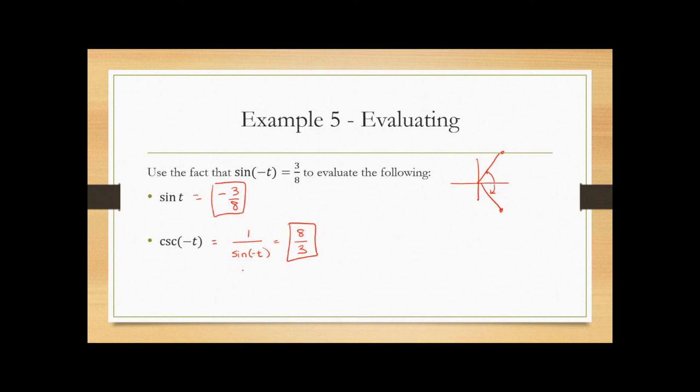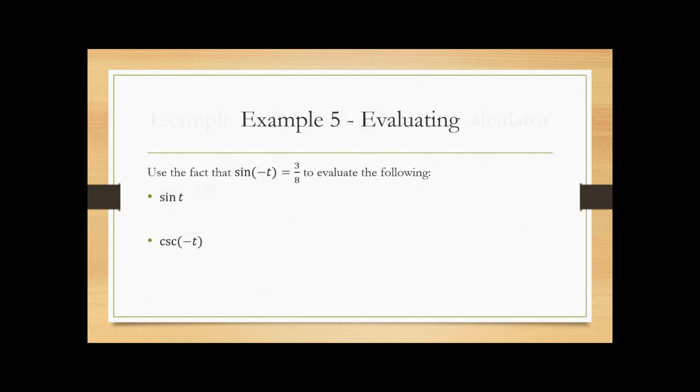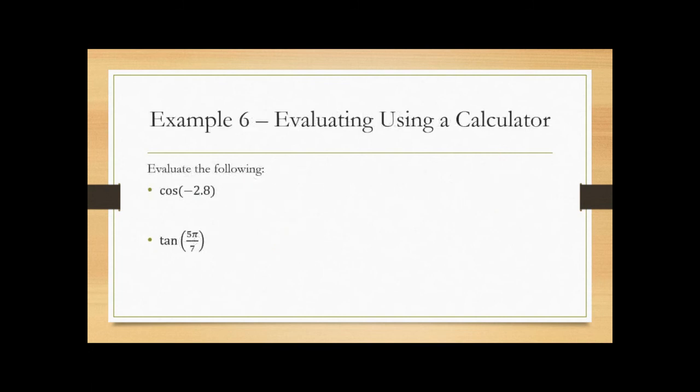It's the reciprocal — not a sign change — just doing the reciprocal. The sign stays, so cosecant of (-t) is 8/3.